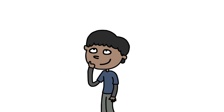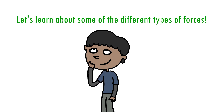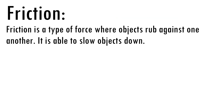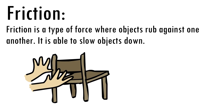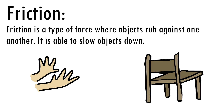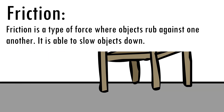Now that we understand a little more about forces, how about we talk about some of the different types of forces? Friction is a type of force where objects rub against one another. It is able to slow objects down. If you push a chair across the room, it will not keep moving forever and ever — it will eventually slow down. This is caused by the frictional force that is happening with the chair and the floor.